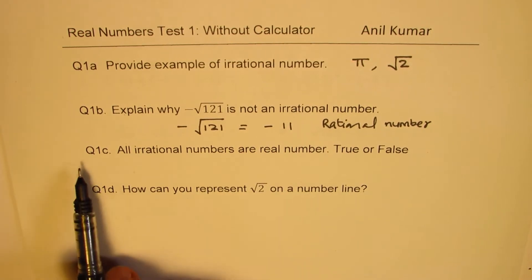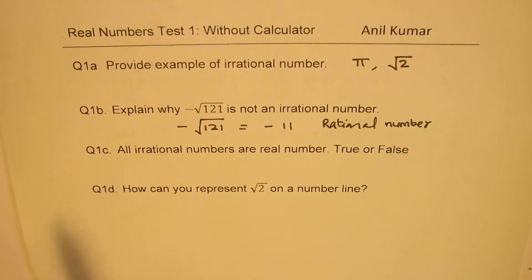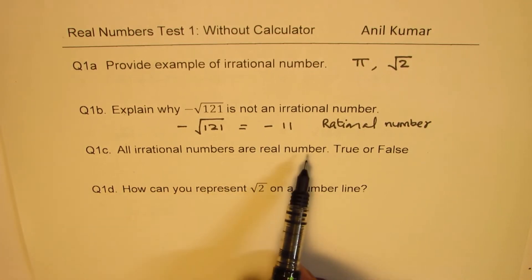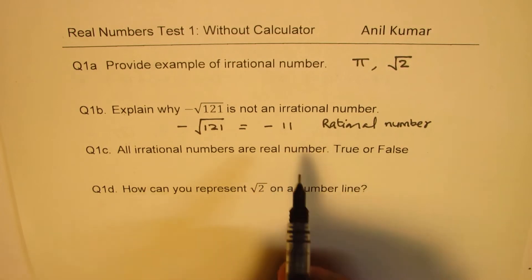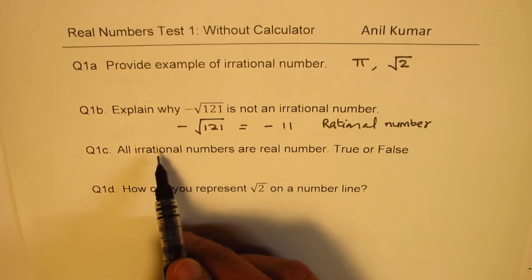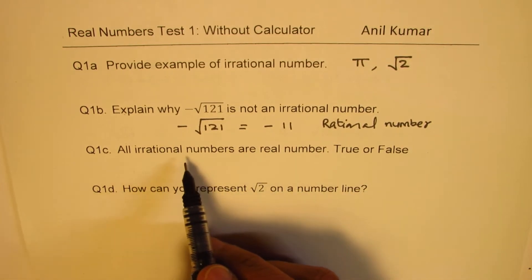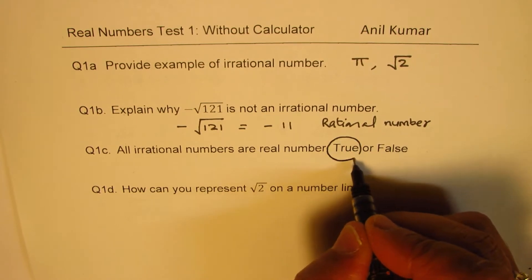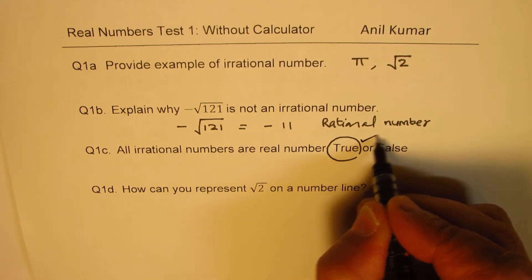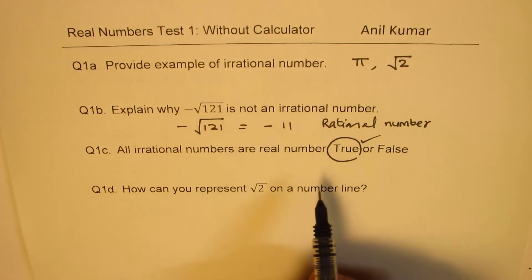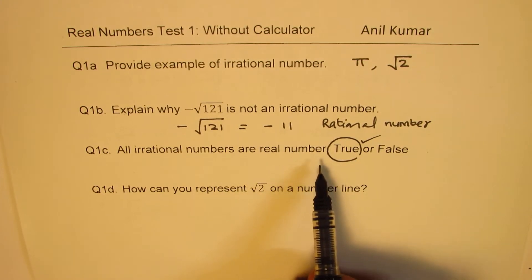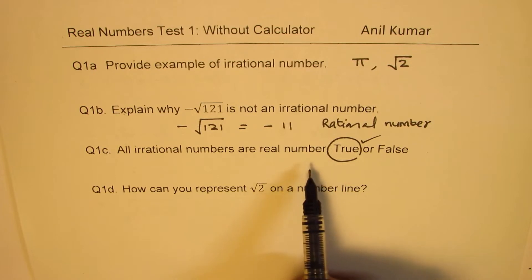Question 1c: All irrational numbers are real numbers — true or false? Real numbers include both rational and irrational numbers, so the statement is true. The set of real numbers is a bigger set which includes natural numbers, whole numbers, integers, rational numbers, and irrational numbers.